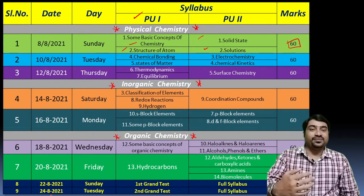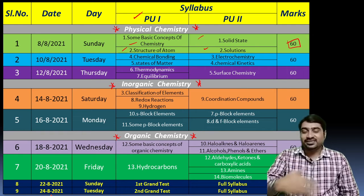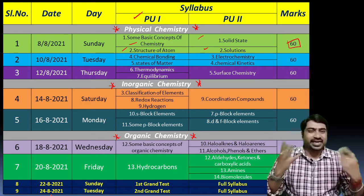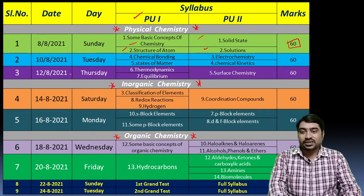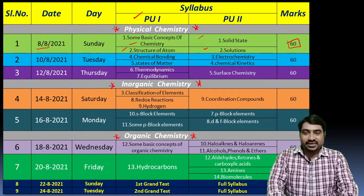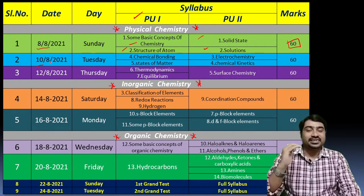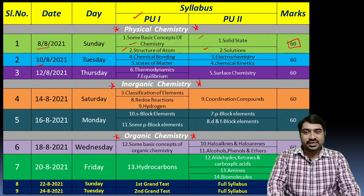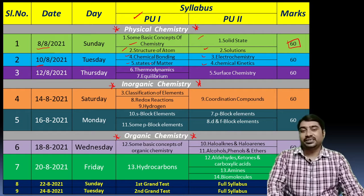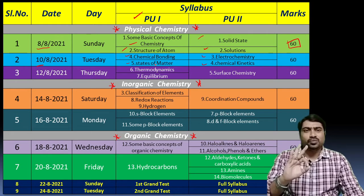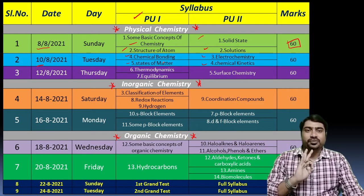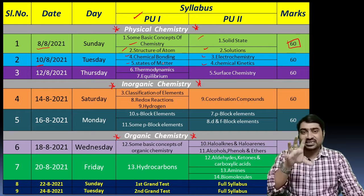After that you will have some time for your own revision, then you can prepare and directly go for the examination. August 8th, Sunday — 4th chapter. August 10th, Tuesday — on alternate days. Topics include chemical bonding, states of matter, electrochemistry, and chemical kinetics.